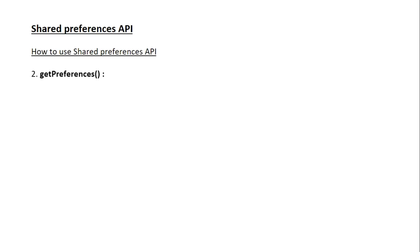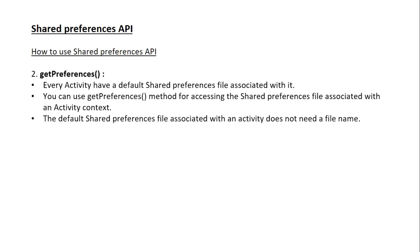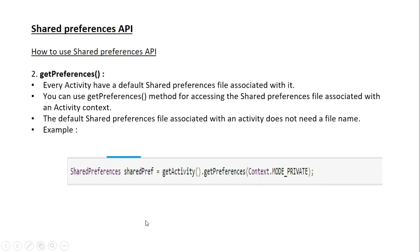The second method is getPreferences. Every activity has a default SharedPreferences file associated with it. You can use the getPreferences method for accessing the SharedPreferences file associated with an activity context. The default SharedPreferences file associated with an activity does not need a file name. In the example, we access SharedPreferences available with an activity by calling getPreferences on the context — there is no need to specify the file name, and there is only one parameter: the opening mode.